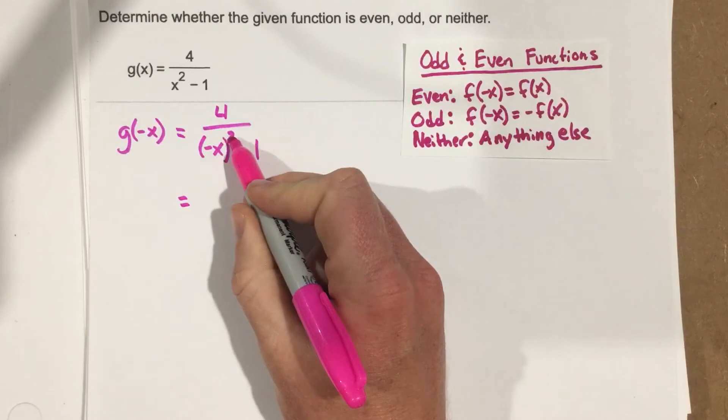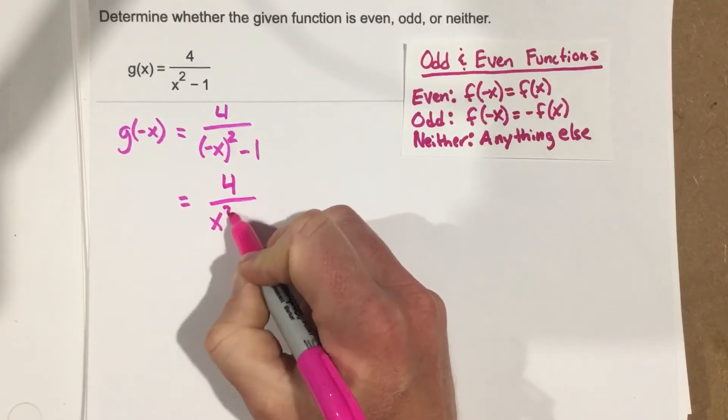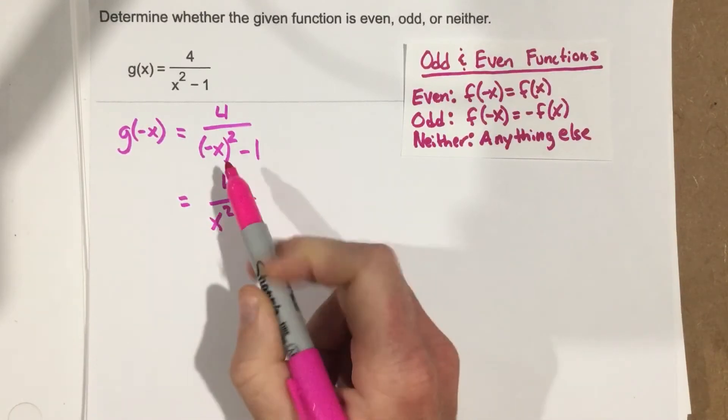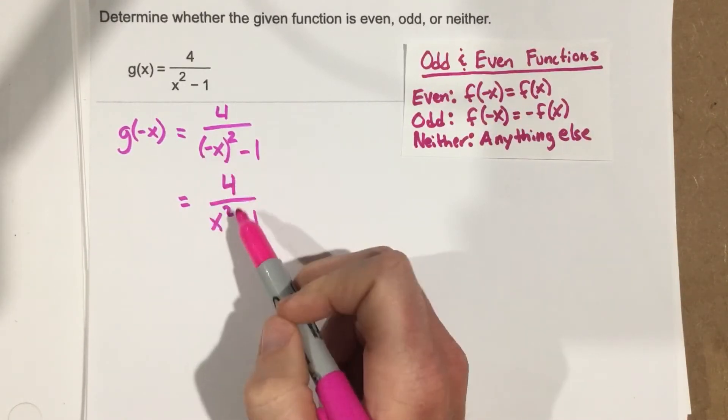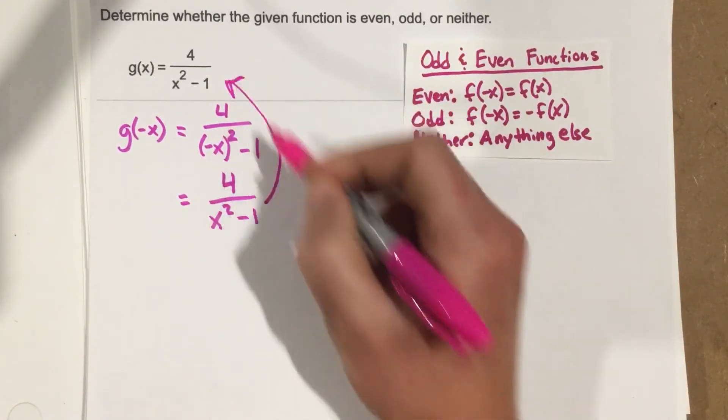Negative x squared is just x squared, so we end up with 4 over x squared minus 1. Now notice that when we plugged in the negative x, we got the original function.